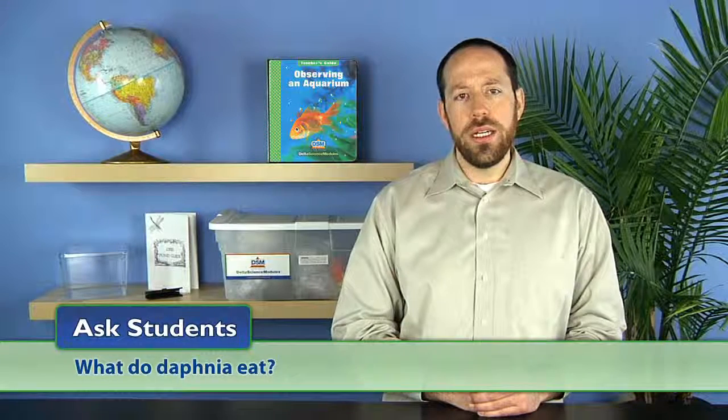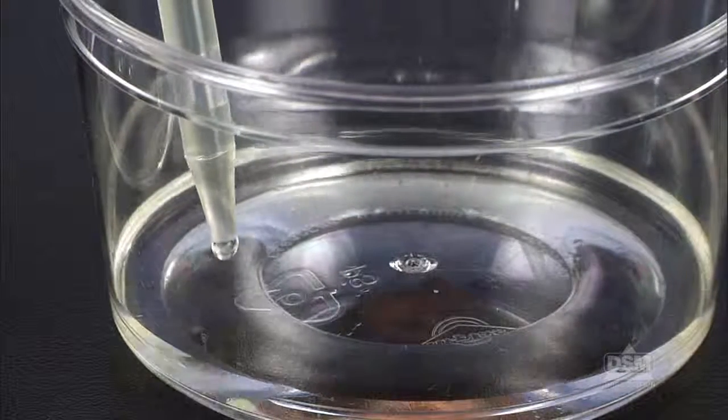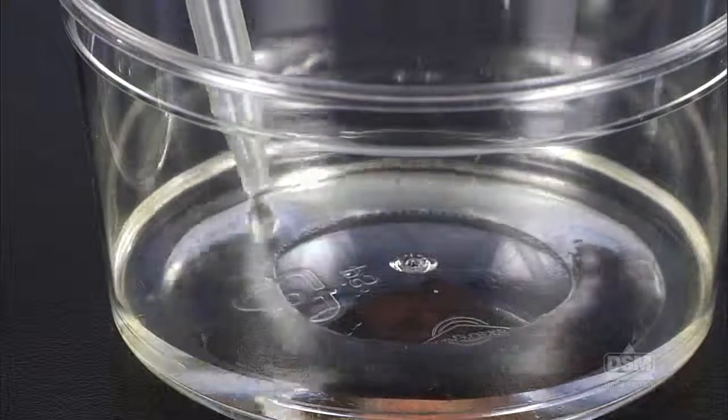Spend a few minutes discussing what students learned about algae and daphnia in the previous activity. Then ask, what do daphnia eat? Students should recall that daphnia eat algae. Have students place a drop of algae into their dish of daphnia and observe what happens. The daphnia should migrate to the algae and become more active.